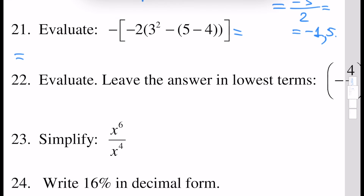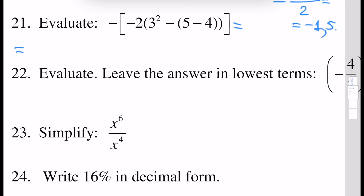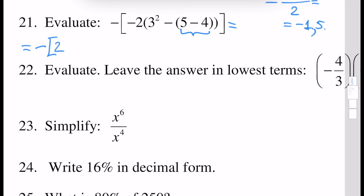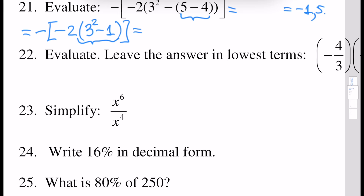Next, evaluate this expression. In this kind of problem, first of all we have to solve everything inside the inner brackets. We look at these brackets, but inside these brackets we have more inner brackets, so those inner brackets must be calculated first. So 5 minus 4 is 1, and if we rewrite we will have minus 2 times (3 squared minus 1). Next we calculate what is inside the next inner brackets: 3 squared is 9, and 9 minus 1 is 8. It will be transformed into minus 2 times 8, which is minus 16, and minus minus 16 will give us 16.